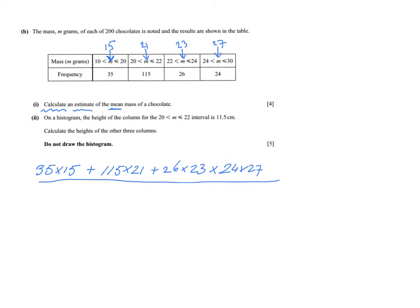Now some students then do, oh, divided by 4. But you have more than just 4 chocolates. And if you would have to estimate at the beginning what is the mean mass roughly, well, I would say about 21, maybe 22, somewhere there. It is not going to be more than 30 because 30 grams is the highest mass anyway. So it is not divided by 4. How many chocolates do you have? You actually have 200 chocolates. 35 plus 115 plus 26 plus 24. So you have to divide it by 200.